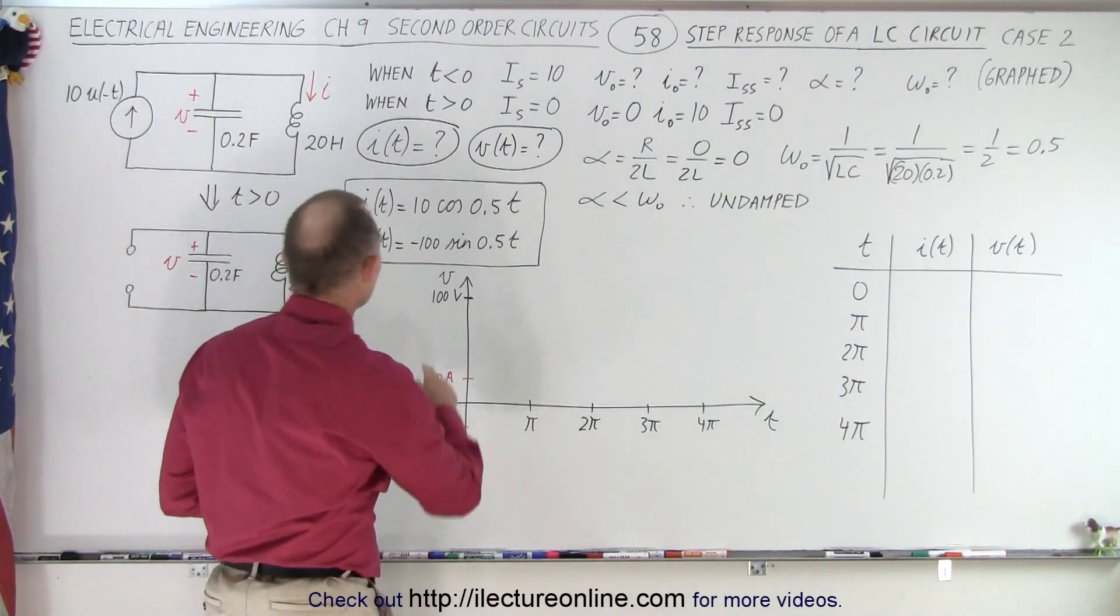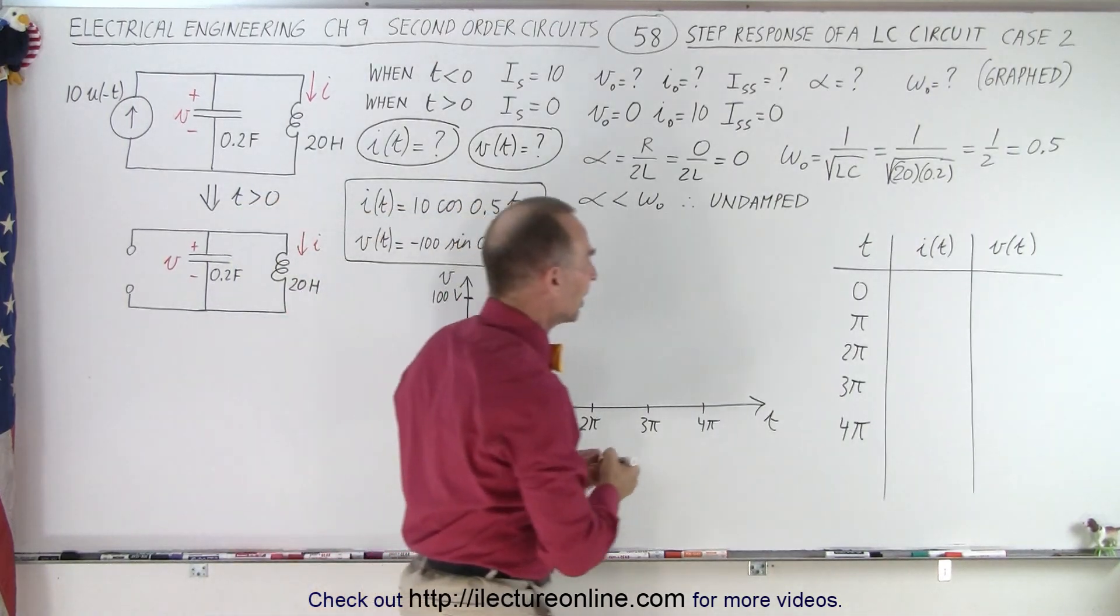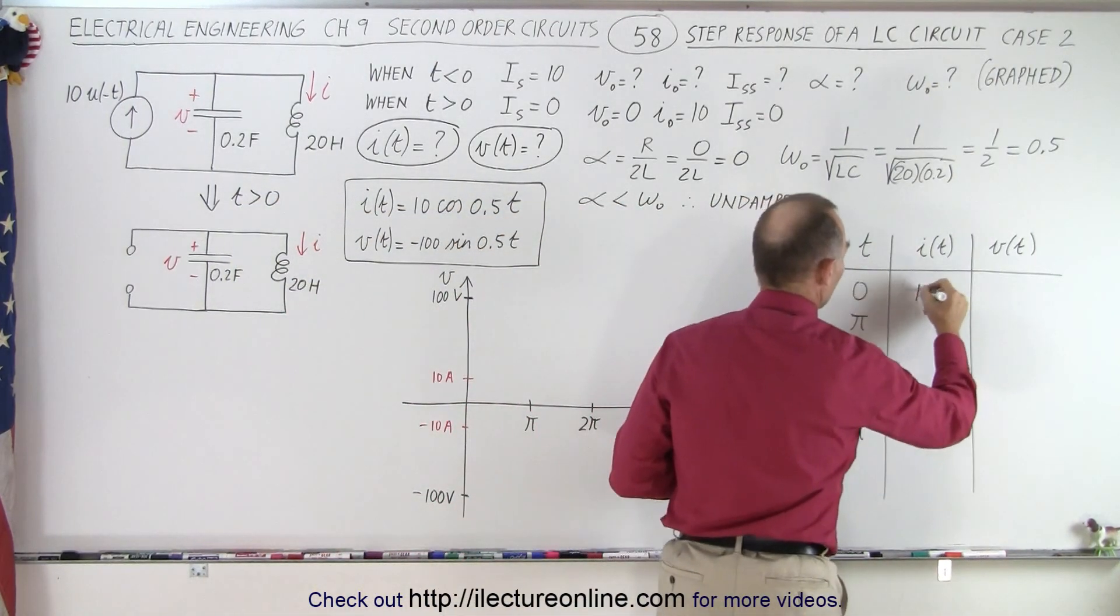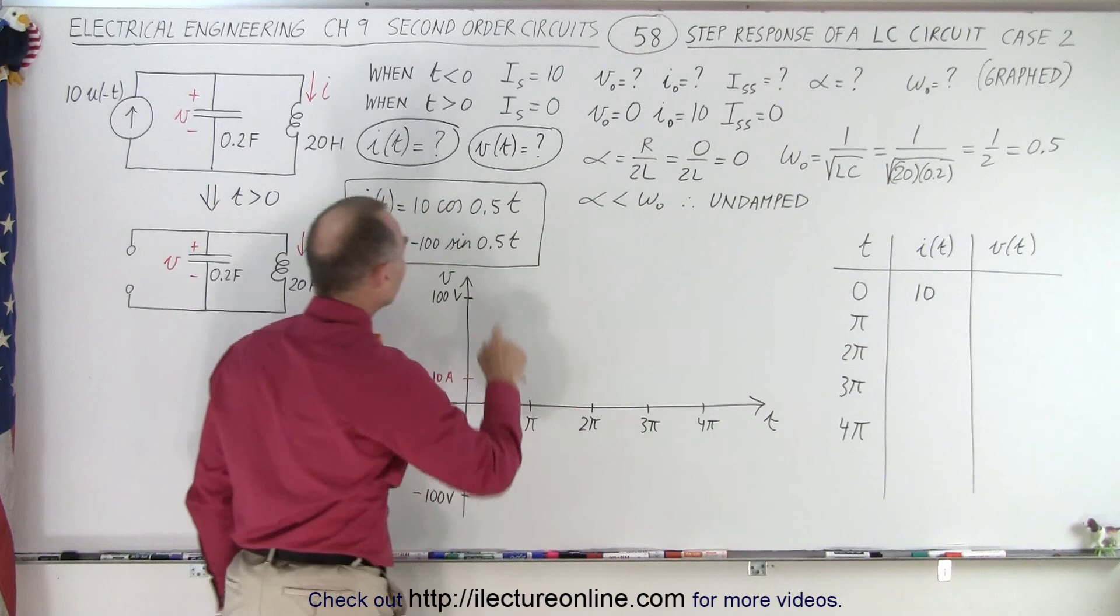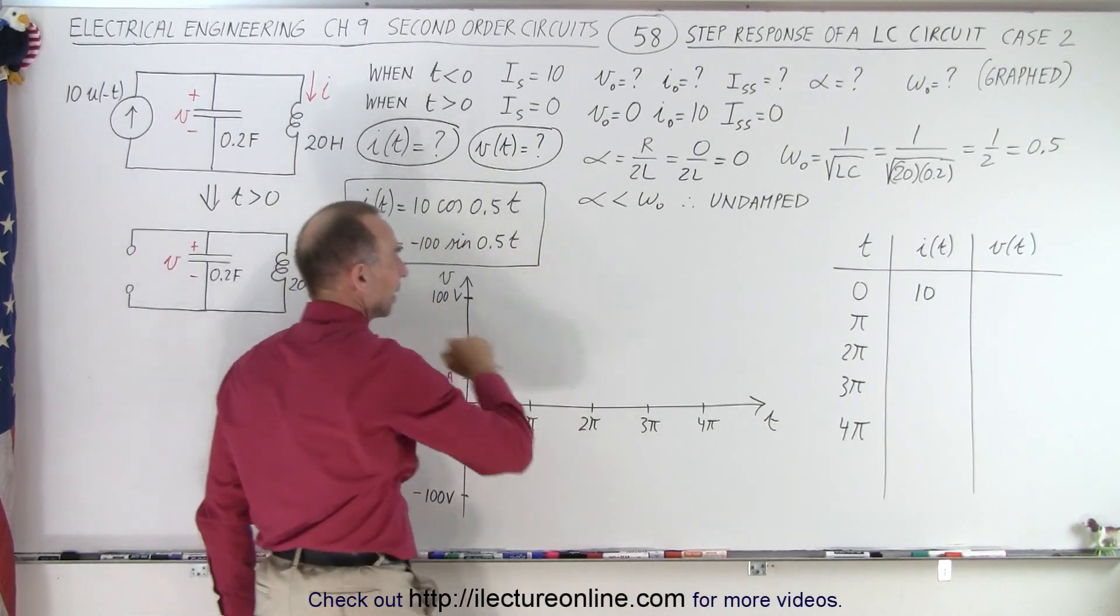Starting with the current, when time is equal to 0, the cosine of 0 is 1, so we have a current of 10 amps. When time equals 0.5 times pi, that's pi over 2, the cosine of that is 0, so we have 0 current.